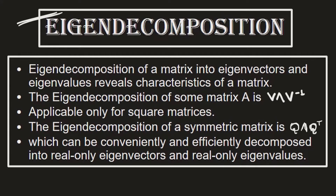Eigendecomposition of a matrix into eigenvectors and eigenvalues reveals characteristics of a matrix. We will try to understand what kind of characteristics we get to know after decomposing a matrix. The eigendecomposition for a given matrix A will be denoted by a specific symbol, and let me give you a proper breakdown for this.